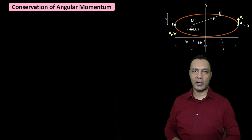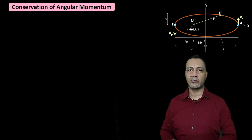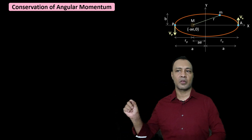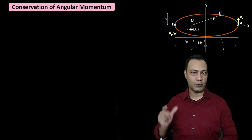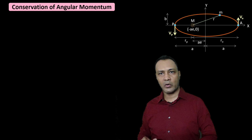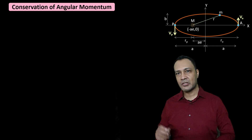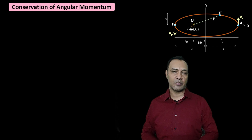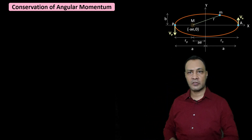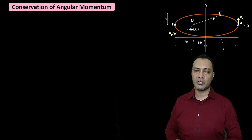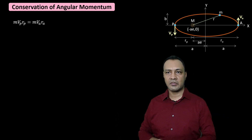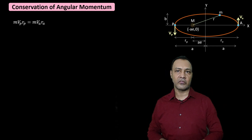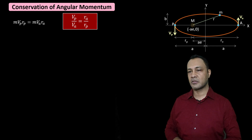The angular momentum of a particle about a point is M times R cross V, where R is the position vector and V is the velocity vector. If the angle between R and V is θ, the magnitude of angular momentum is MRV sin θ. Since angular momentum is conserved, I choose the perihelion and aphelion as the two points. At both points, the velocity and position vectors are perpendicular, so the conservation gives M·Vp·Rp = M·Va·Ra, which gives Vp / Va = Ra / Rp.